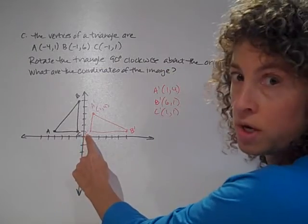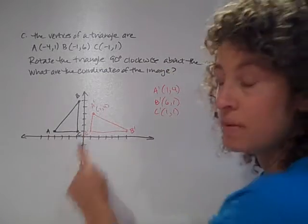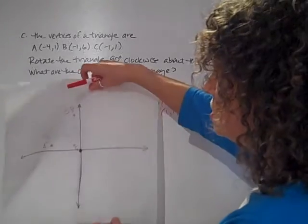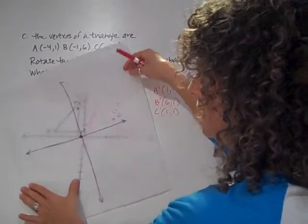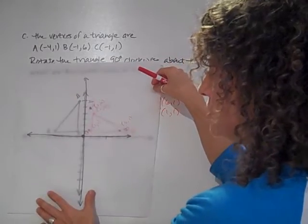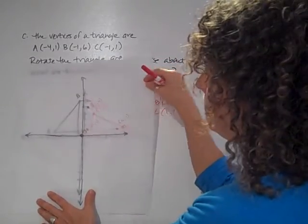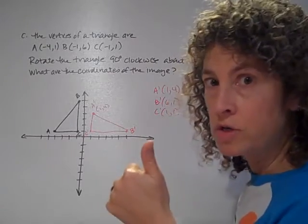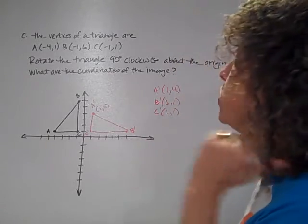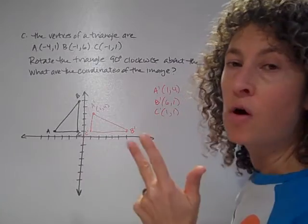And that center point here, my center of origin, stayed the same for both of those. So in the original and in the new one, that center stayed the same for both. Okay? So three things when we're rotating. We want to know what's the center of origin. That's super important. Which direction are we going to go in and how far are we going to go?